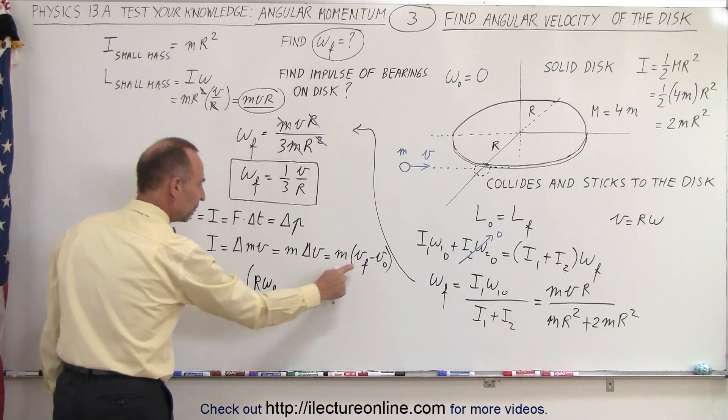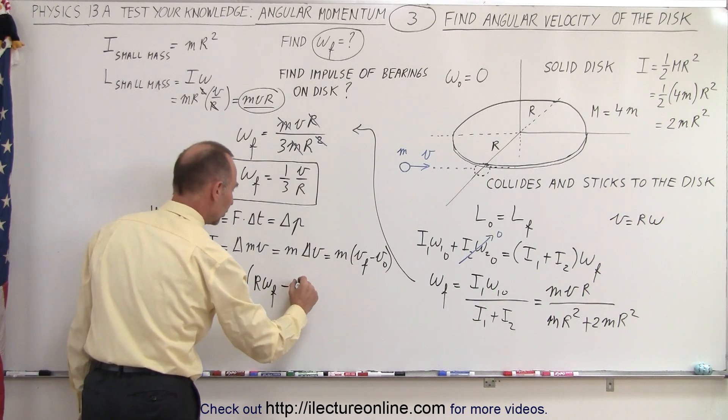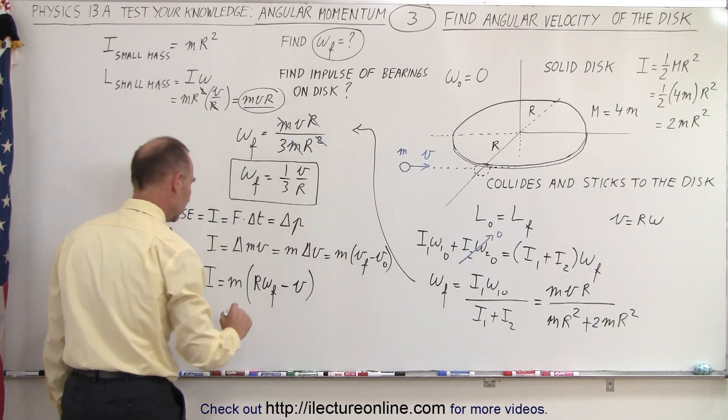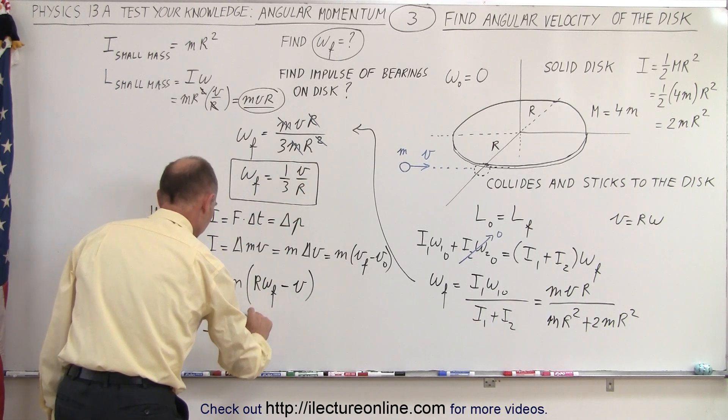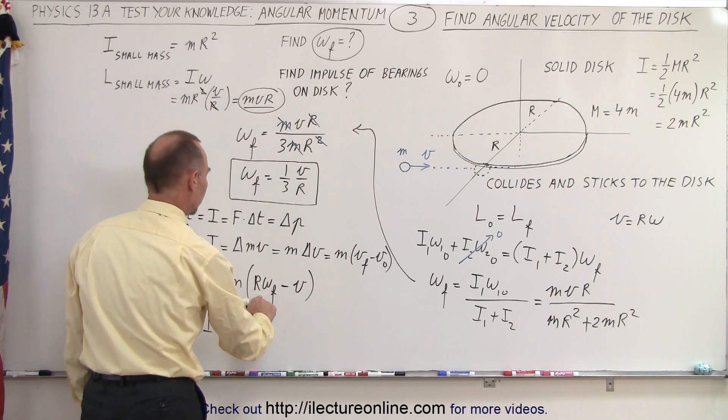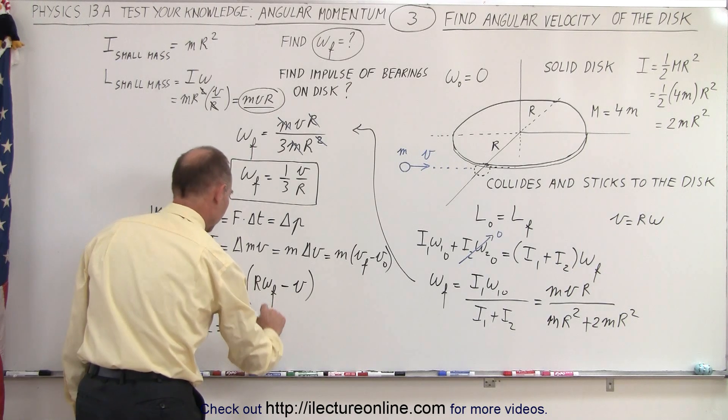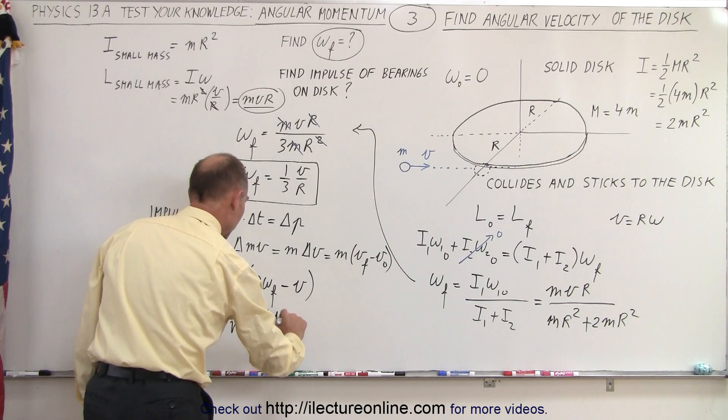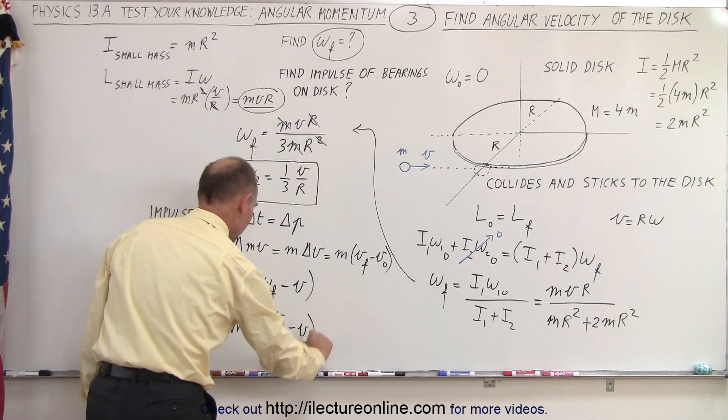I'll just go ahead and do that. So that would be v_final minus v_initial, which is v, and ω_final is one-third v over r. So that means the impulse equals m times r—r would be, well that's still r—ω_final is one-third v over r minus v.